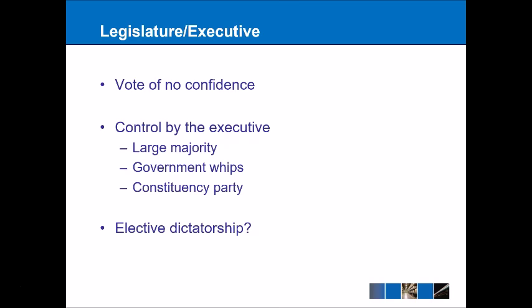In terms of the checks that apply, the legislature can in theory hold the executive to account through a vote of no confidence. But realistically, it's probably the other way around — the executive holds much more power over the legislature, because of the parliamentary system we have in the UK. Because of the first-past-the-post system, governments often have a large majority. The Conservatives at the moment only have a majority of about 30, but it's more than enough to prevent enough Conservative MPs from voting against the government and bringing it down.